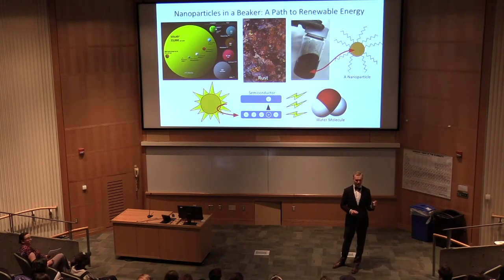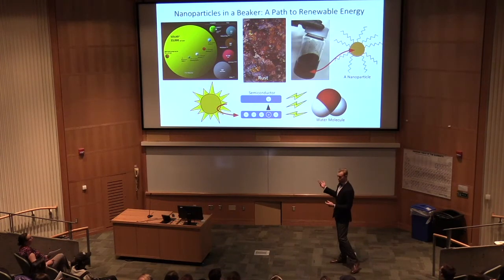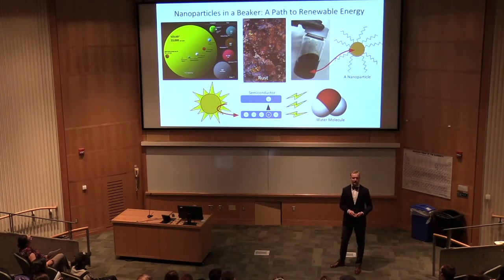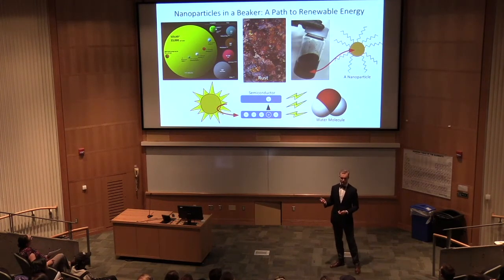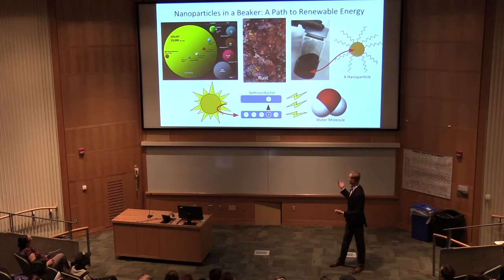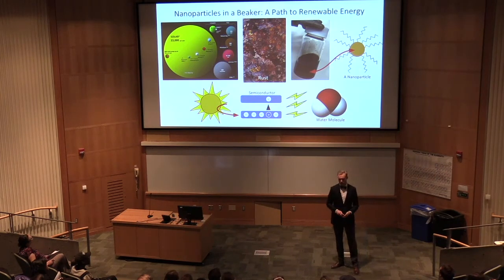You then take the hydrogen gas and use it as fuel. So what kind of material can we use as a semiconductor? We use rust. It's really common, it's cheap, it's non-toxic. It's great.